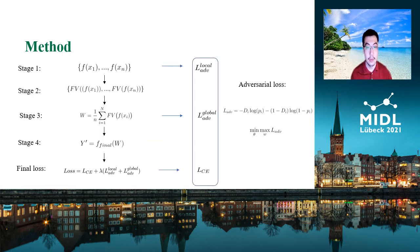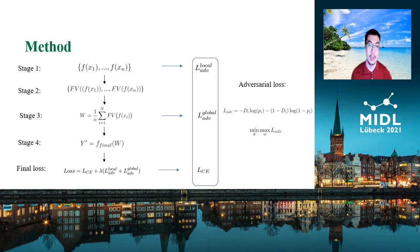Here is another view of the entire pipeline: stage one is feature encoding, stage two is Fisher vector encoding, stage three is global average pooling, and stage four is final classification. We extract the stage one and stage three features for adversarial loss calculation, and we combine them in the final loss calculation.